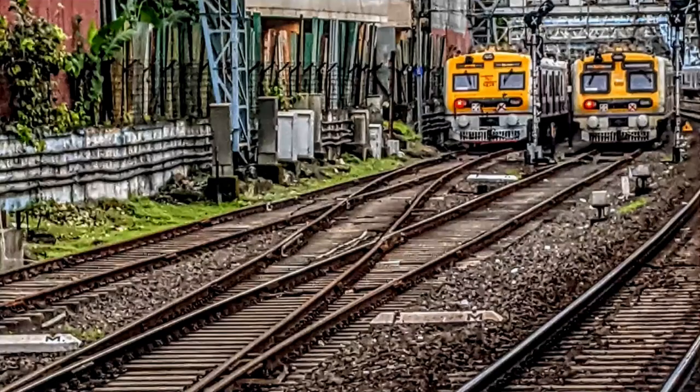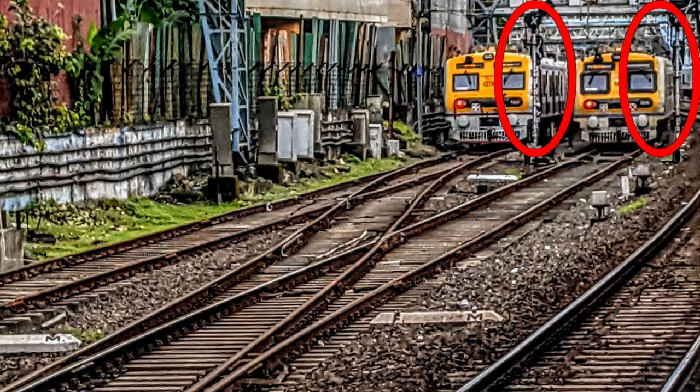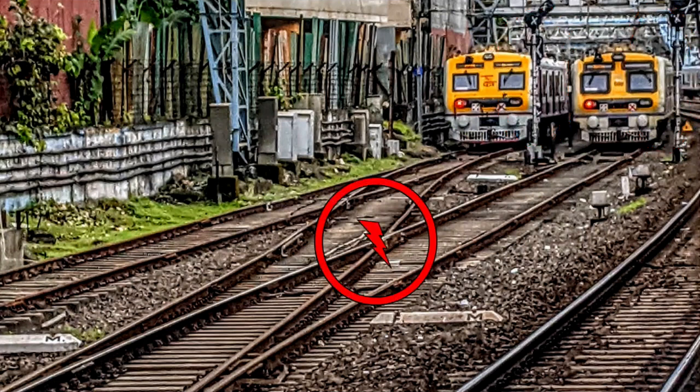These are trains. They transport people and freight efficiently. We like them. It is important that they stop where they are supposed to, following these signals. Otherwise, they can collide and derail, causing loss of life and property.